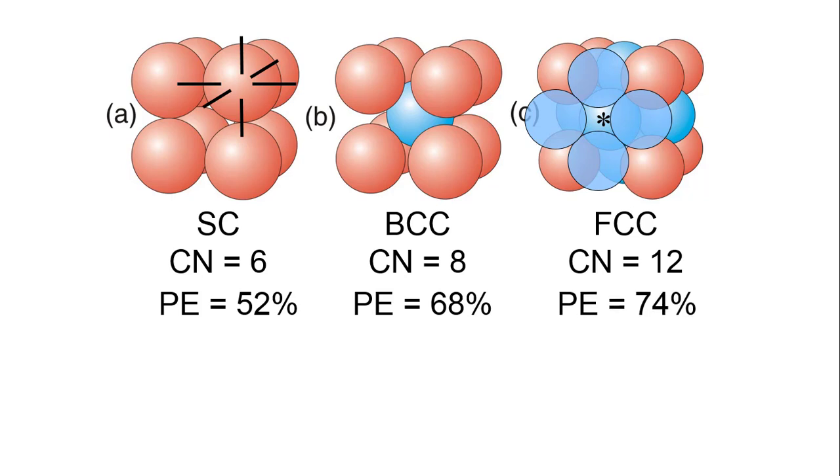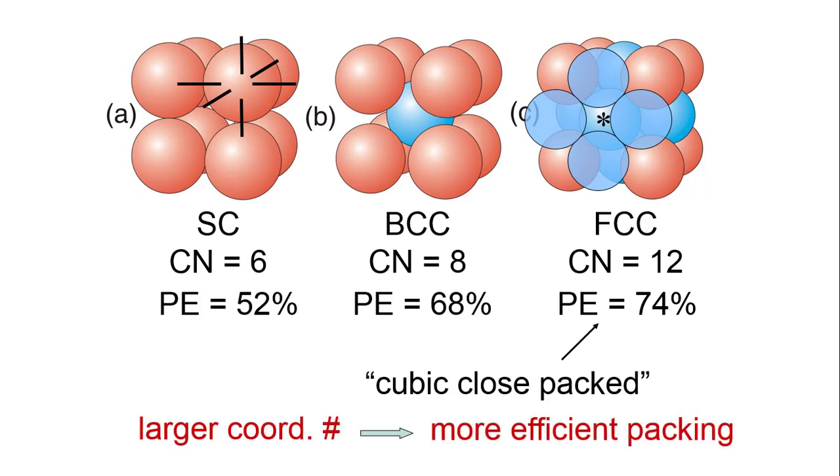This is the highest efficiency among the cubic cells and is sometimes referred to as cubic close-packed. The main trend to observe is that a larger coordination number leads to more efficient packing.